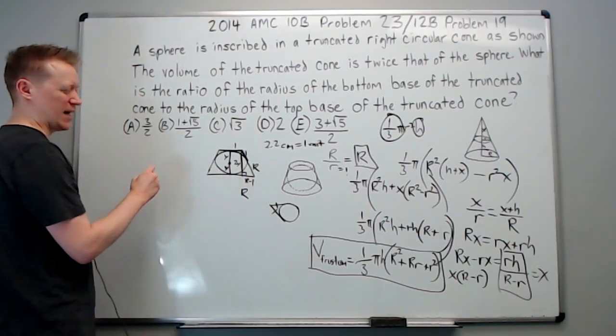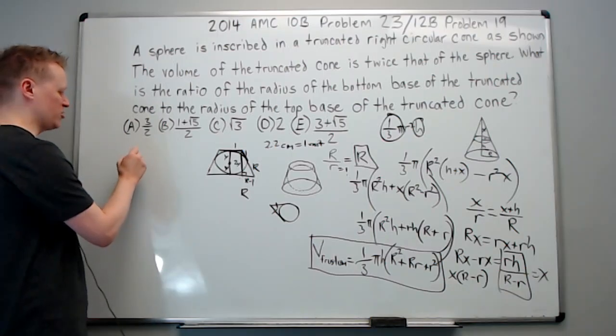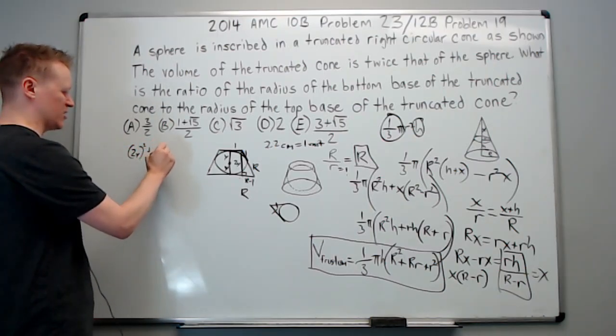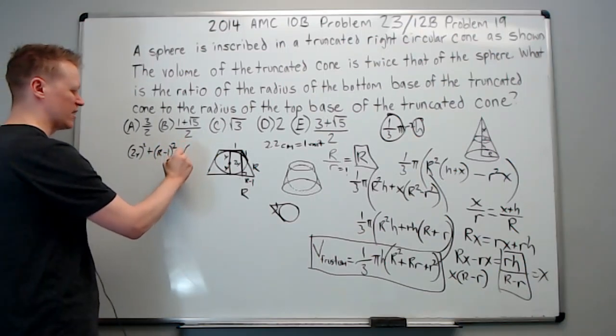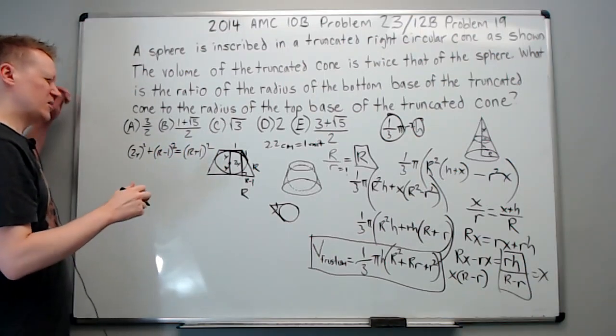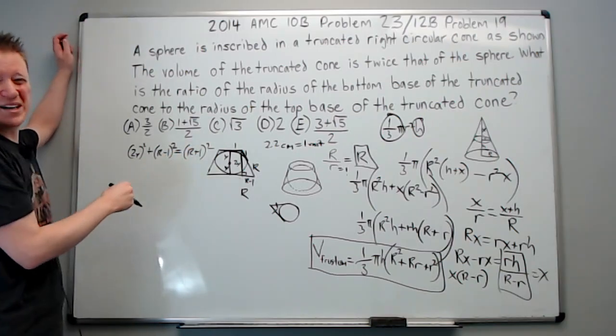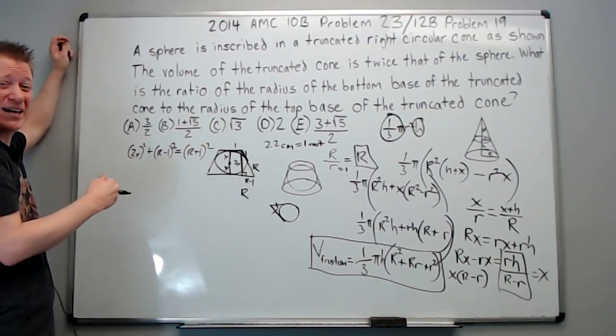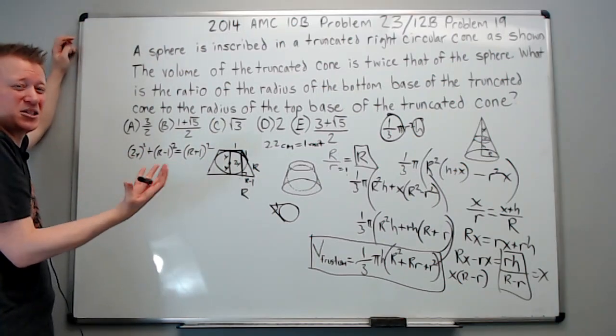2y quantity squared plus R minus 1 squared equals R plus 1 squared. We don't even know how we're going to use this right now. But let's go ahead and do it because it feels right. It feels like something you can find, so you probably should.